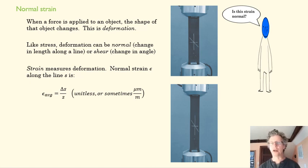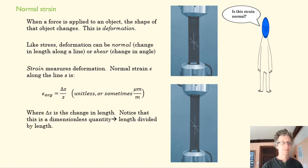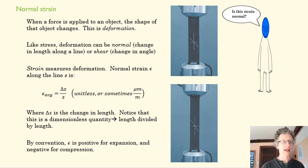Those are both going to be the same units, so they divide out, and strain is unitless. It's essentially a ratio: how long was this initially compared to how long it was after the load was applied? By convention, normal strain is positive for expansion and negative for compression. That's the big idea with strain—it's a ratio of the change in length to the original length, and it's unitless.